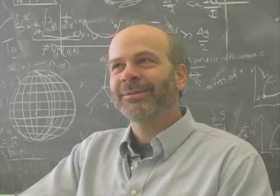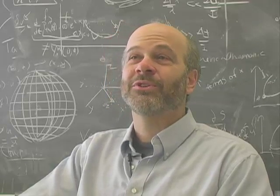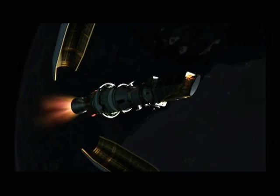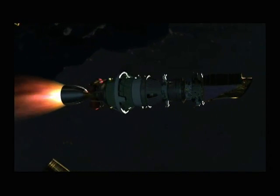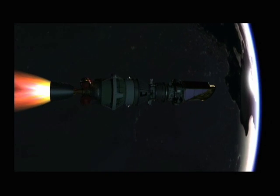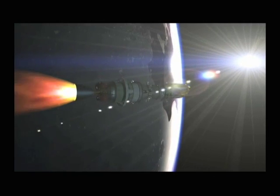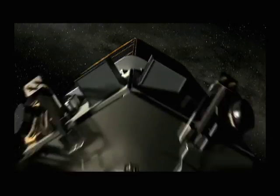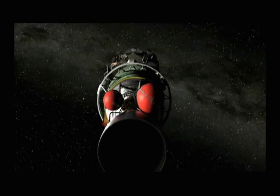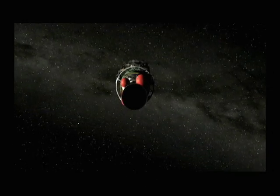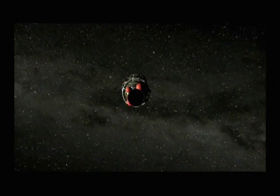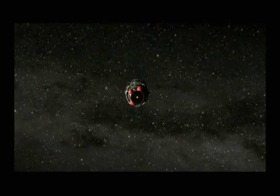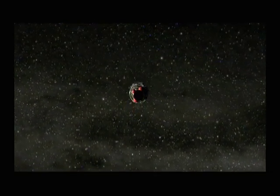Kepler will be looking at stars the right way, which is all the time, from a platform that's not rotating, that's very stable and can point in one direction continuously for quite a long time. The thing that makes Kepler interesting is that it's not going to be in orbit around the Earth. It's in an Earth-trailing, sun-centered orbit. The advantage of that is no Earth. You can point at one part of the sky forever without worrying about the sun, the Earth, or the moon getting in the way.